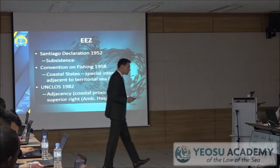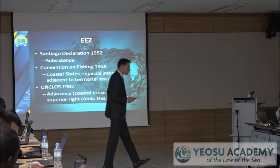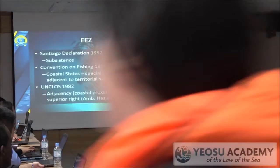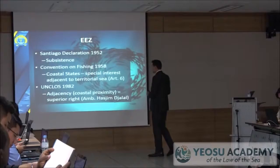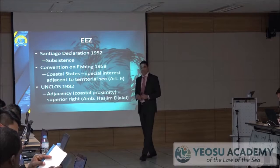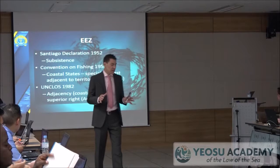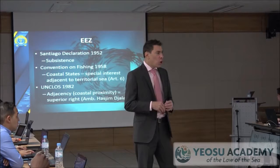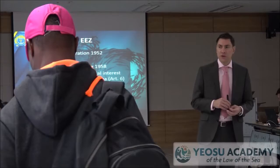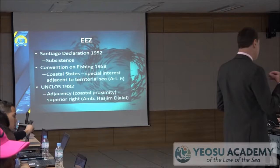The exclusive economic zone began with the Santiago Declaration of Chile, Ecuador, and Peru in 1952. These three states made a trilateral declaration that they would assert sovereignty and jurisdiction over the area adjacent to their shore, going out to 200 nautical miles. They did so principally on the basis of ensuring subsistence and development as developing states.